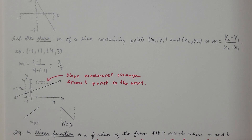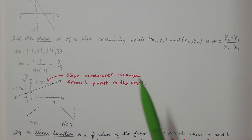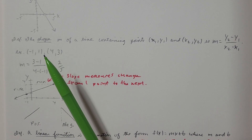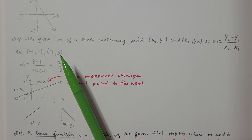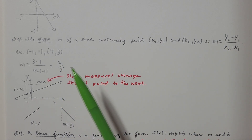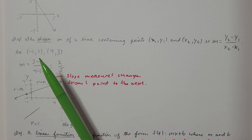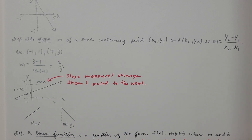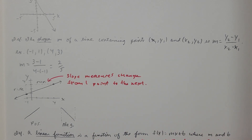For example, given the points (-1, 1) and (4, 3), I want to find the slope of the line passing through them. Change in y over change in x: x₁ is -1, y₁ is 1, x₂ is 4, y₂ is 3. Plugging in: (3 minus 1) over (4 minus negative 1), which is 2 over 5. So the slope is 2/5.